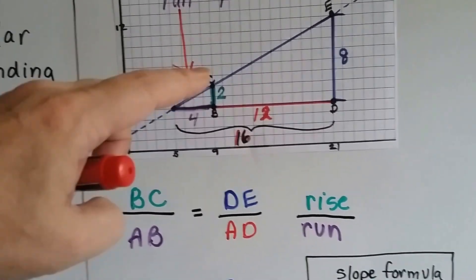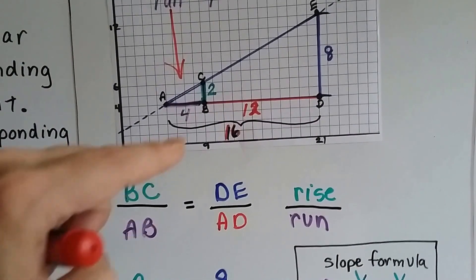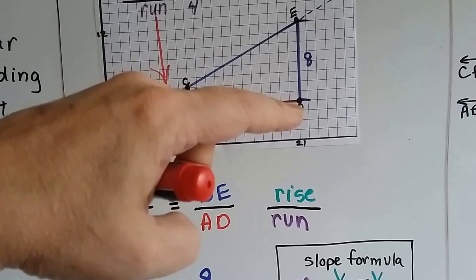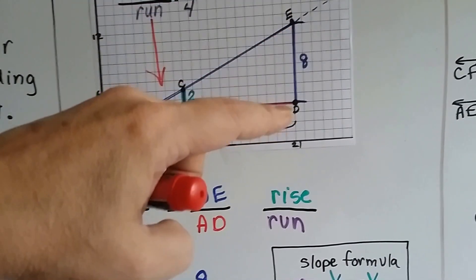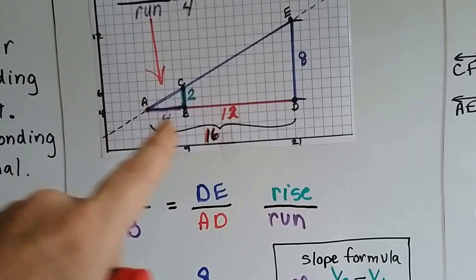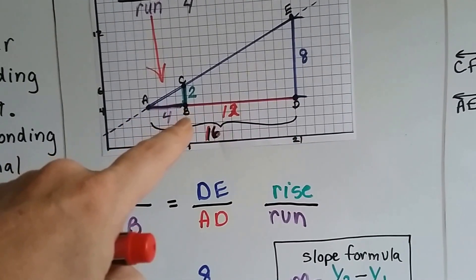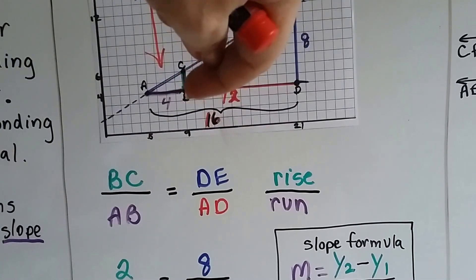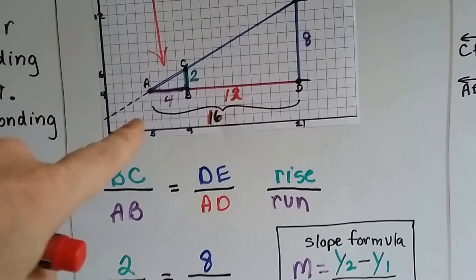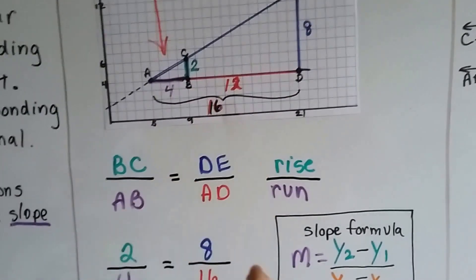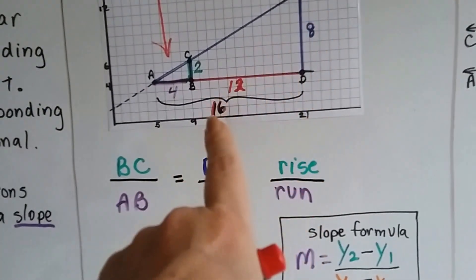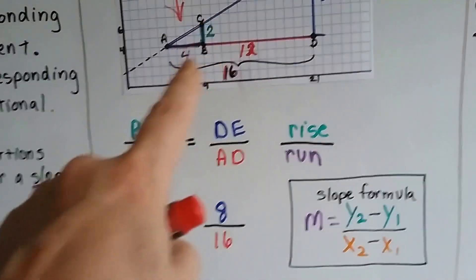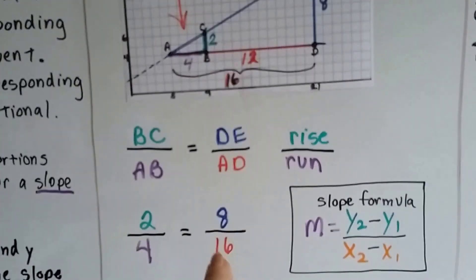So BC, the green one right here, over AB is the rise over the run. And DE, this line segment, is an 8, over AD. We come all the way to this point, because the whole triangle starts here. We would ignore that little line right there, because that's the big triangle, all the way to A. So AD is a total of 16. We put the 8 over the 16, that's our rise and our run. 2 over 4, and 8 over 16.